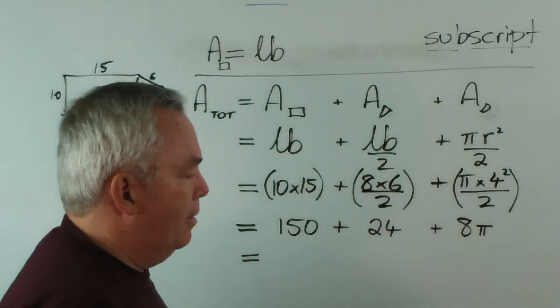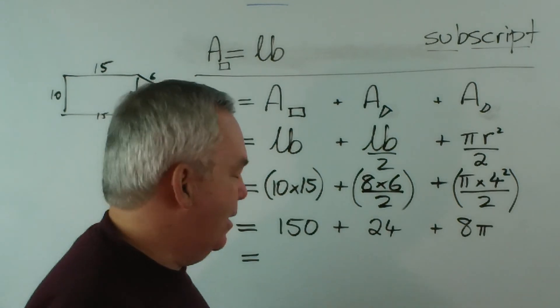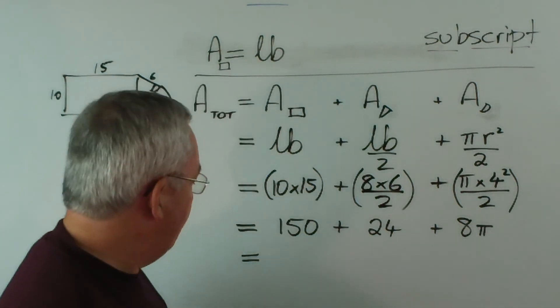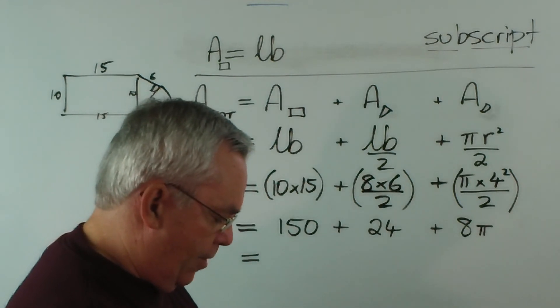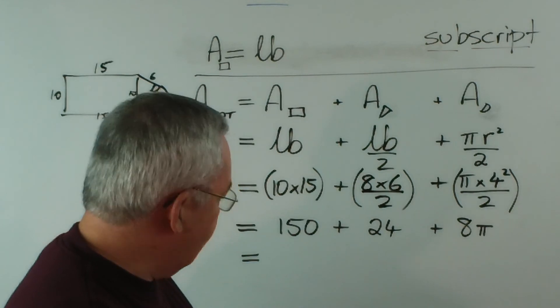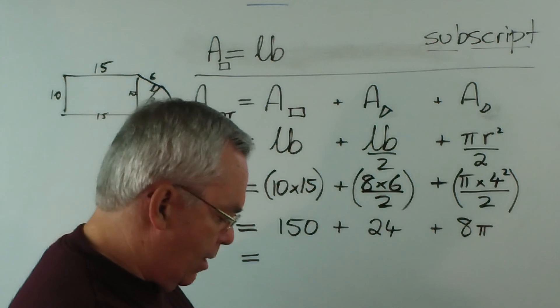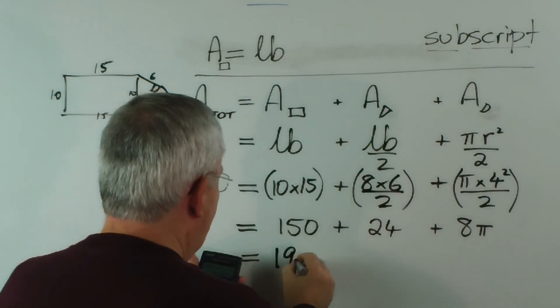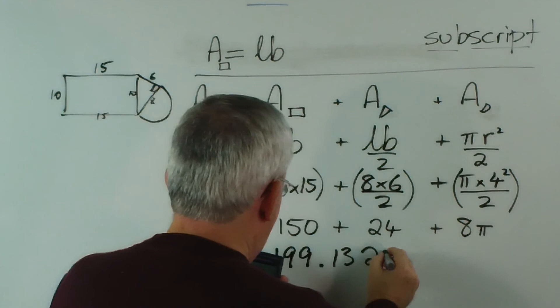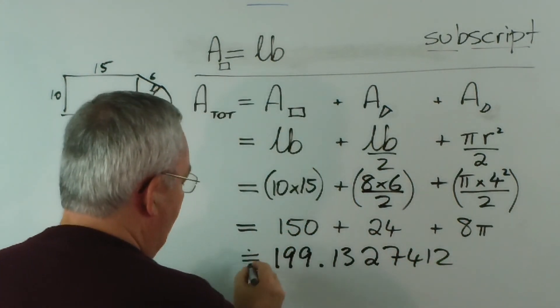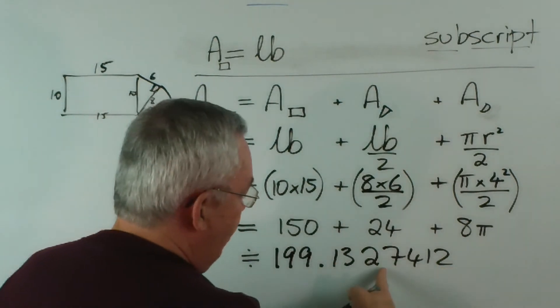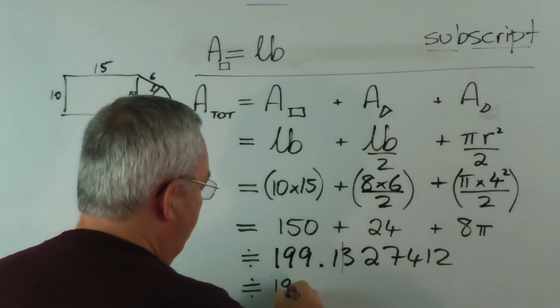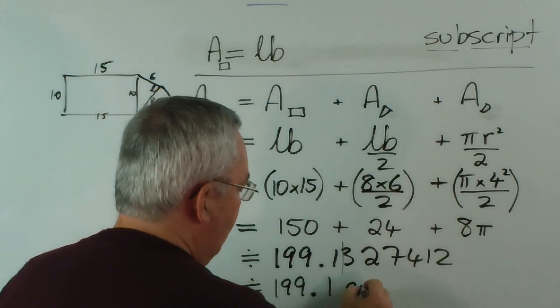I realised I don't have my calculator with me, I'm going to have to go and get it. That was a little bit of an oversight not having a calculator, but here we go. We type 150 plus 24 plus pi times eight equals, and we write out the entire stream: 199.1327412, that will be an approximate result, very accurate but only to seven decimal places. And then we might say, if we're rounding it off to one decimal place, 199.1 centimetres squared.